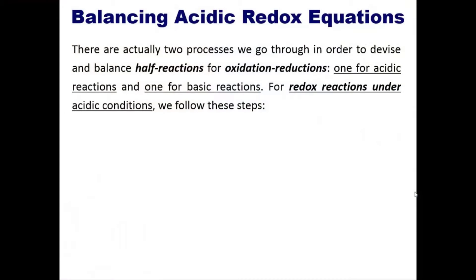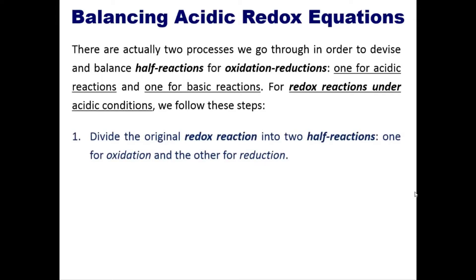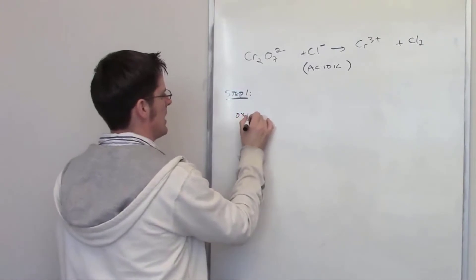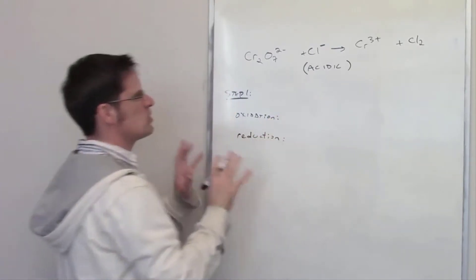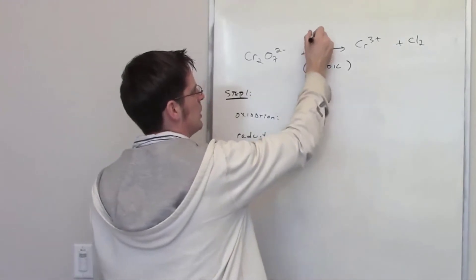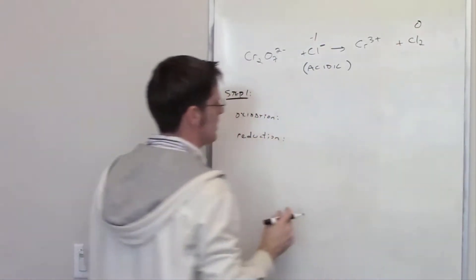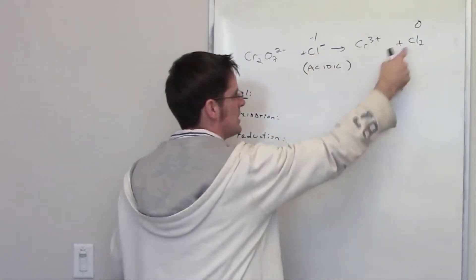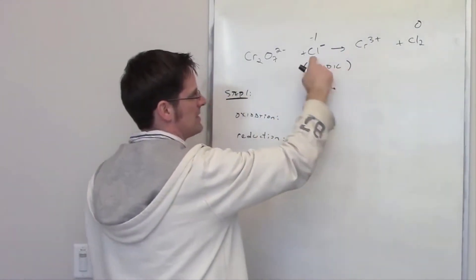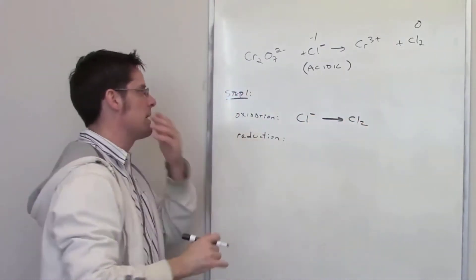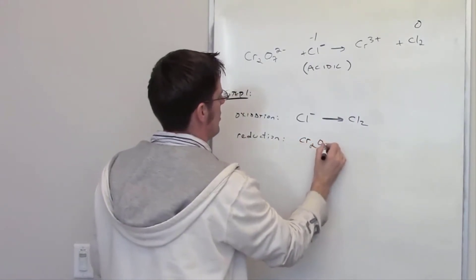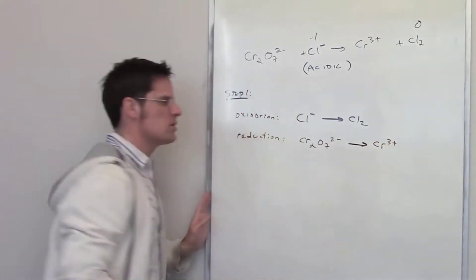Step one is that we divide the original redox reaction into two half reactions, one for oxidation and the other for reduction. Looking at chloride, that's chlorine with a negative one charge — a negative one oxidation number. Chlorine by itself has zero oxidation number. Going from negative one to zero means it loses electrons, becoming more positive, so chlorine is being oxidized. The oxidation half reaction is Cl⁻ going to Cl₂. By default, the reduction half reaction is the remaining species.